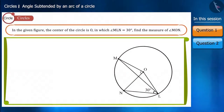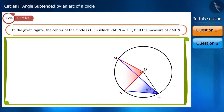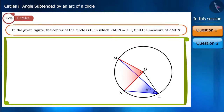In the given figure, the centre of the circle is O and the angle MLN measures 30 degrees. Find the value of the angle MON. Both these angles — angle MLN and angle MON — are formed by the same arc MN.